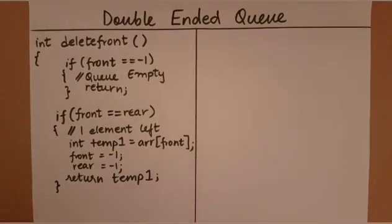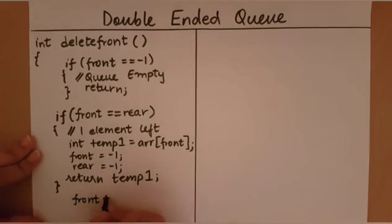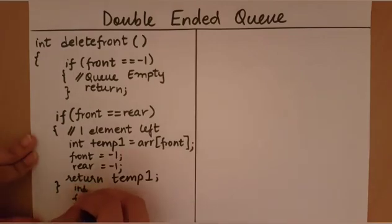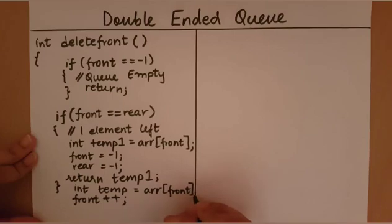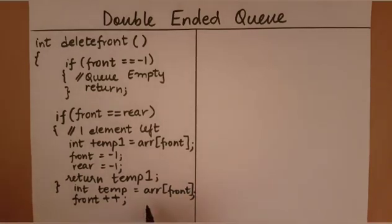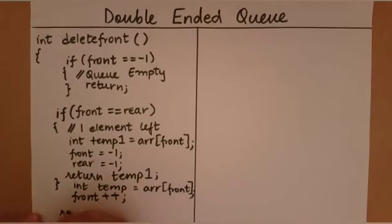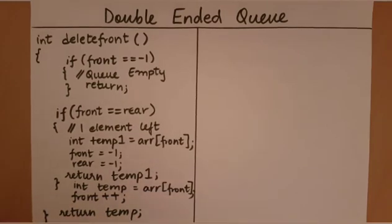Now we have dealt with the case of one element left. All the other cases are the normal cases. To delete from the front, we first store the element at the front in a temporary variable, then we increment front by one, and then we return the temporary variable. This is how you write the code for deleting from the front of a double-ended queue.